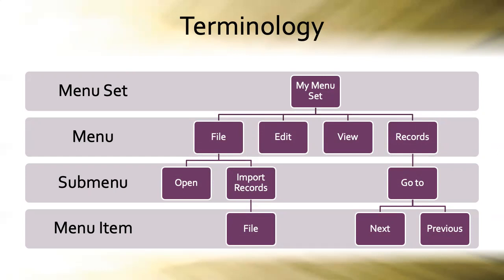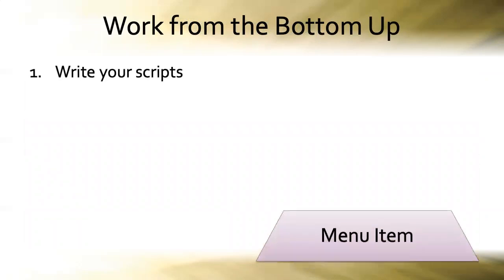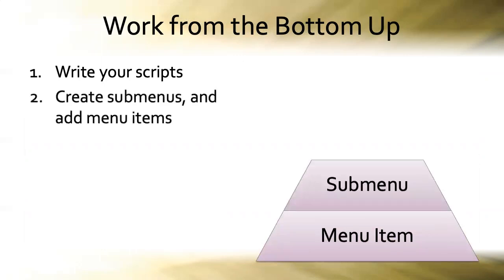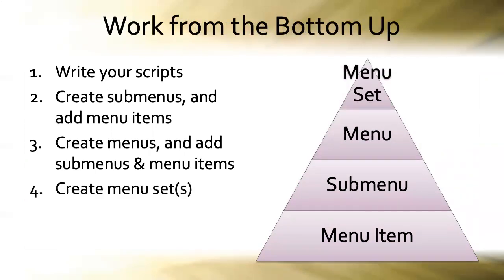You'll use these four terms extensively as you develop custom menus in your FileMaker apps, so keep this image in your mind or screenshot it now. The key to successfully customizing menus in your FileMaker solution is to work from the bottom up. Start by writing your scripts, which you will eventually assign to menu items. Then create your submenus and add menu items to them. Next, create your menus and add submenus and/or menu items to them. Once all your menus are ready, you can create your menu set or sets. Lastly, you'll specify where or when a menu set should be installed.